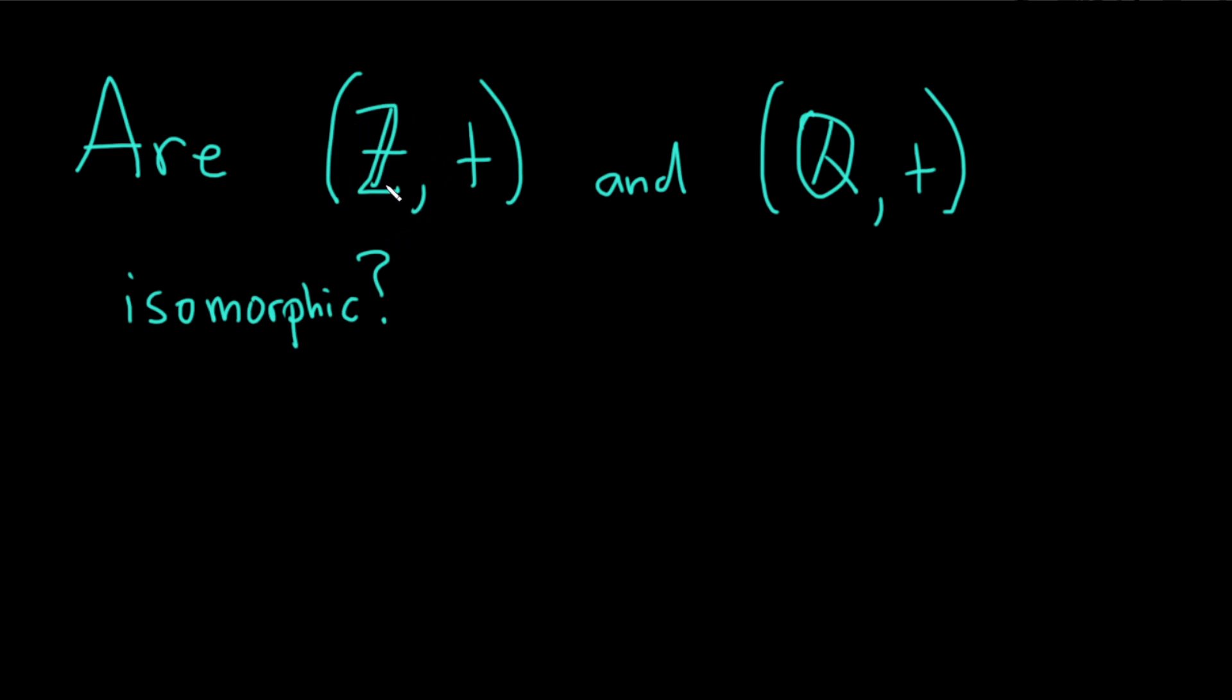So here we are looking at the set of integers under addition, and here we are looking at the set of rational numbers under addition. And we want to know, are they isomorphic?